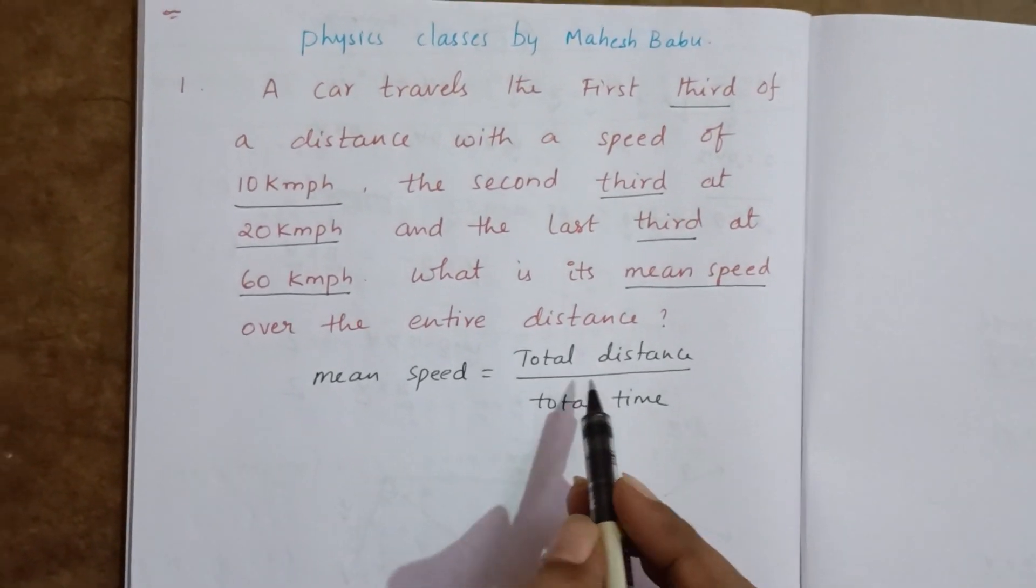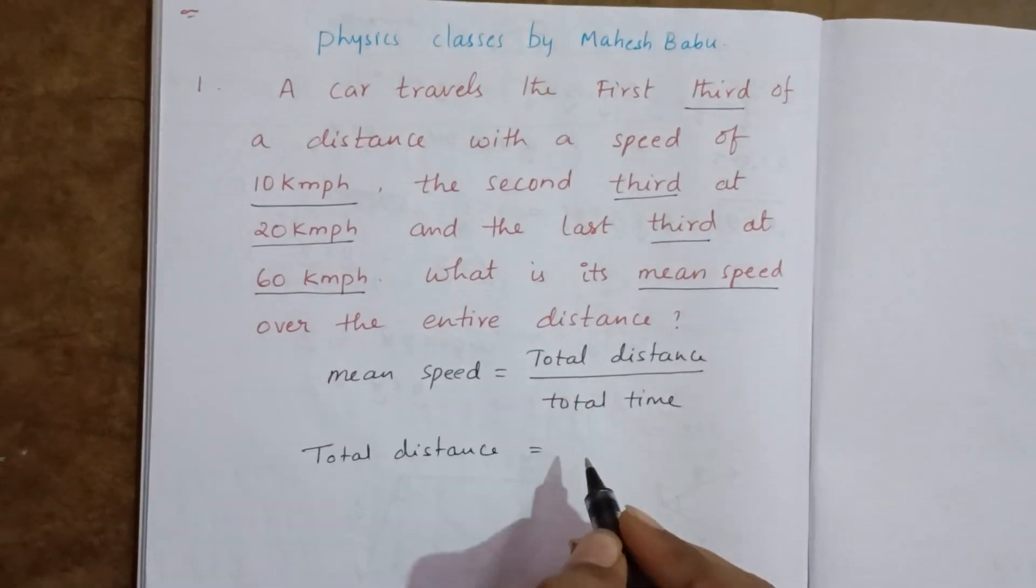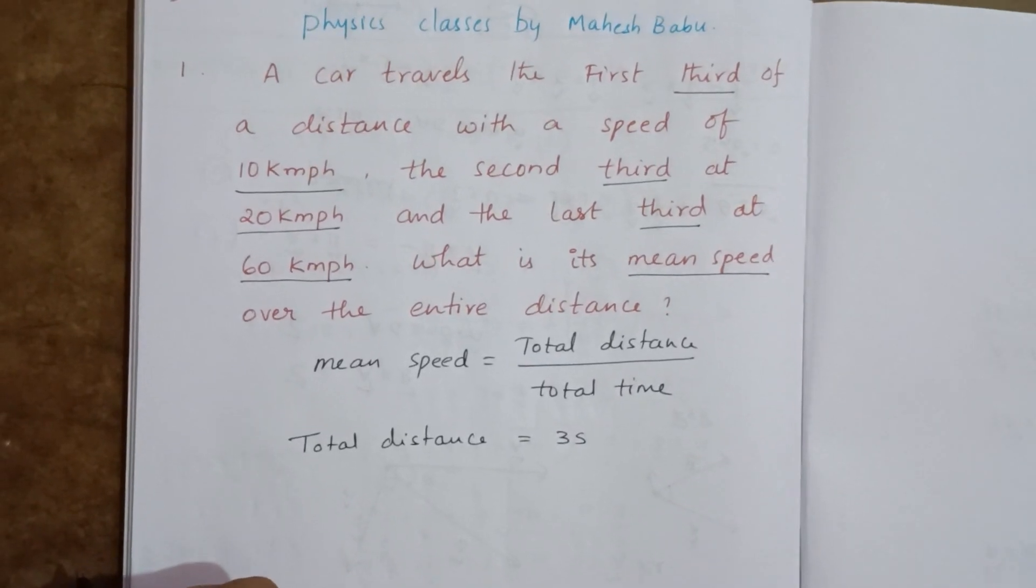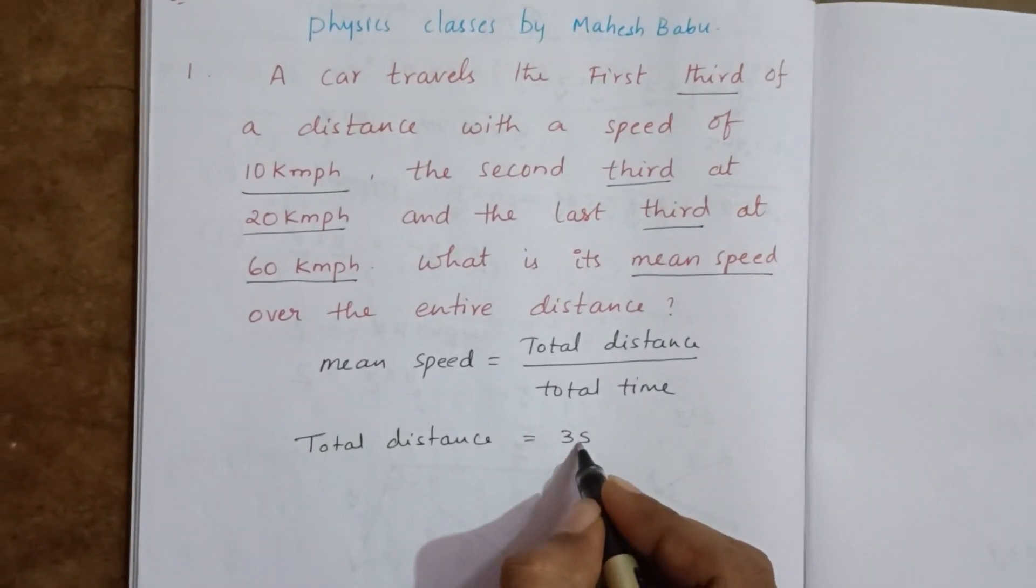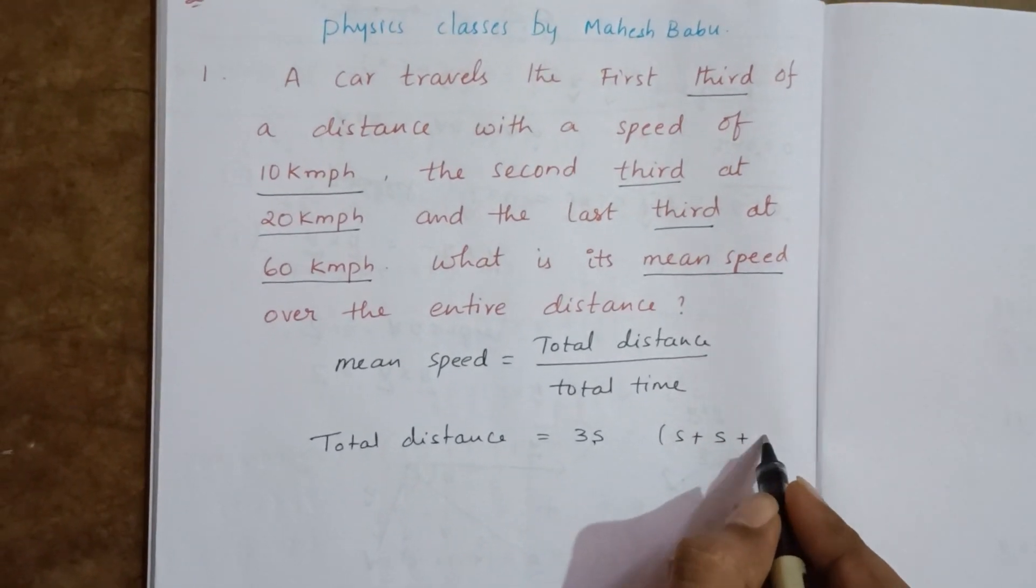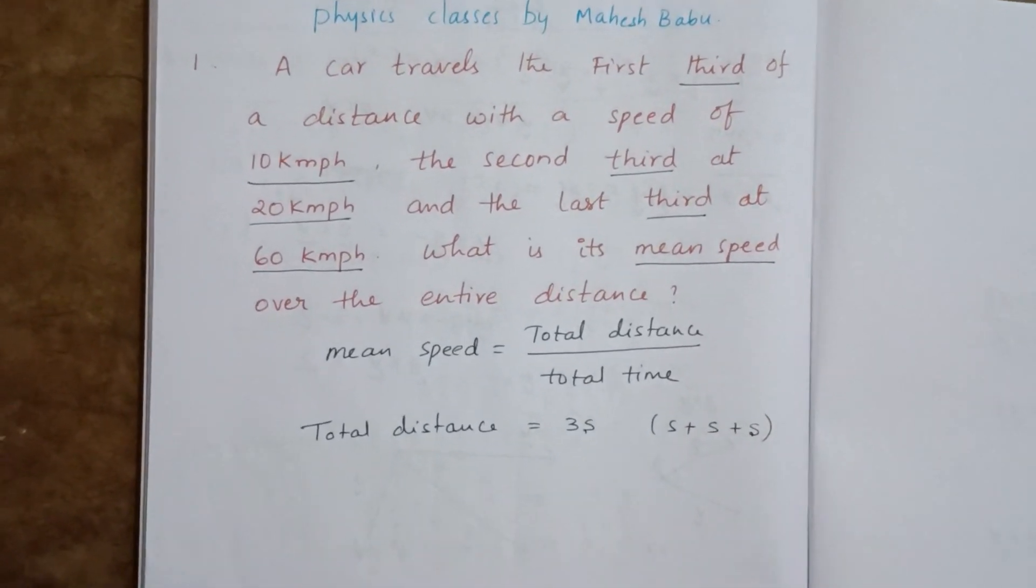We can take the total distance as 3s. First part s, second part s, third part s, so total is 3s.